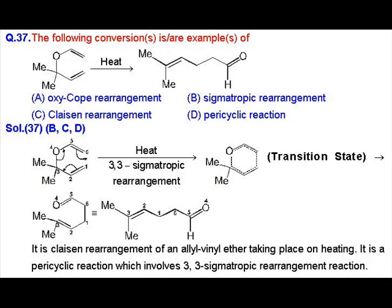Question number 7, MSQ type — it is again a pericyclic reaction involving a sigmatropic rearrangement, specifically a 3,3-sigmatropic rearrangement. It is also known as the Cope rearrangement — not an oxy-Cope rearrangement. The answers are B, C, and D, which contain the correct statements: that it is a sigmatropic rearrangement, a Cope rearrangement, and a pericyclic reaction. Option A is not correct as it incorrectly identifies it as an oxy-Cope rearrangement.